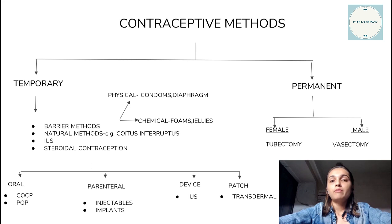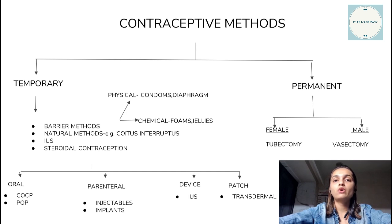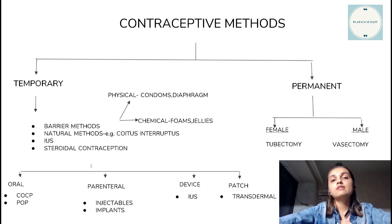In order to remember all the available contraceptive methods, it is important to classify them into two divisions: the temporary methods and the permanent methods. The permanent methods are prescribed to females who have already completed their families or who do not wish to get pregnant again. The temporary methods are prescribed to those who want to space their pregnancies or wish to get pregnant in the future.